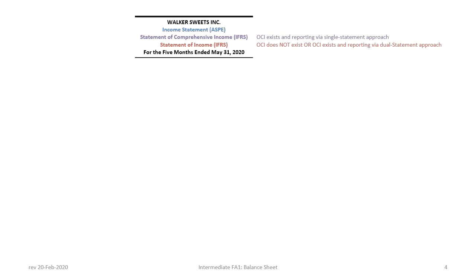To review the preparation of a statement of income, we begin with a title. Under ASPE we would call this an income statement. Under IFRS, if OCI exists and we're reporting via a single statement approach, we would call this a statement of comprehensive income. If OCI does not exist, or if OCI exists and we're reporting using a dual statement approach, we simply call this a statement of income.